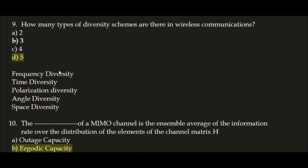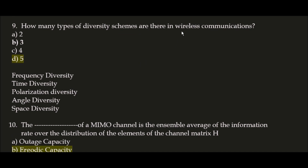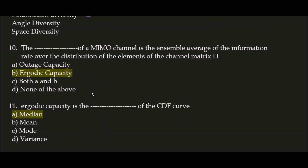Next question: how many types of diversity schemes are there in wireless communication? Some sources say three, but according to Google's best results there are five types: frequency diversity, time diversity, polarization diversity, angle diversity, and space diversity.